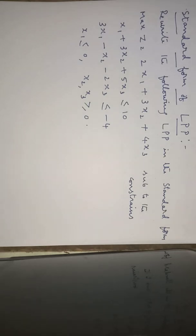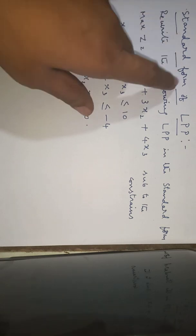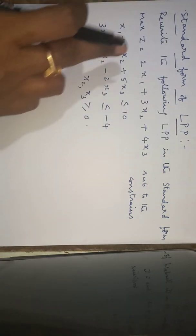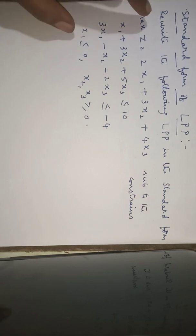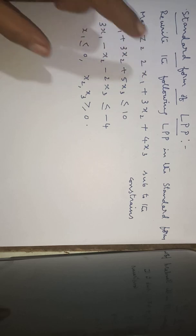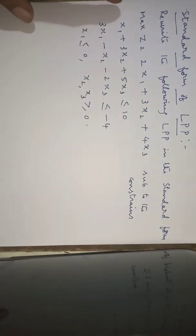Good morning everyone. Today I am going to explain how to convert a given LPP into the standard form. The first problem is: rewrite the following LPP into the standard form. The given problem has one objective function — maximization of z — subject to the first constraint and second constraint.